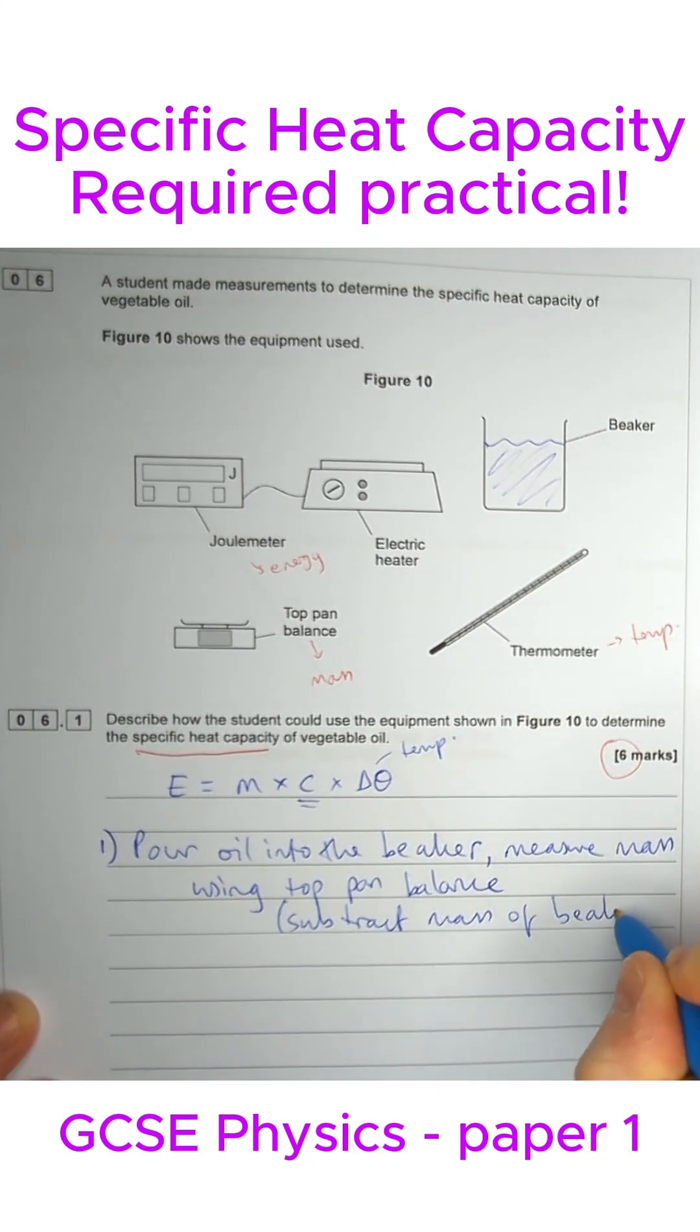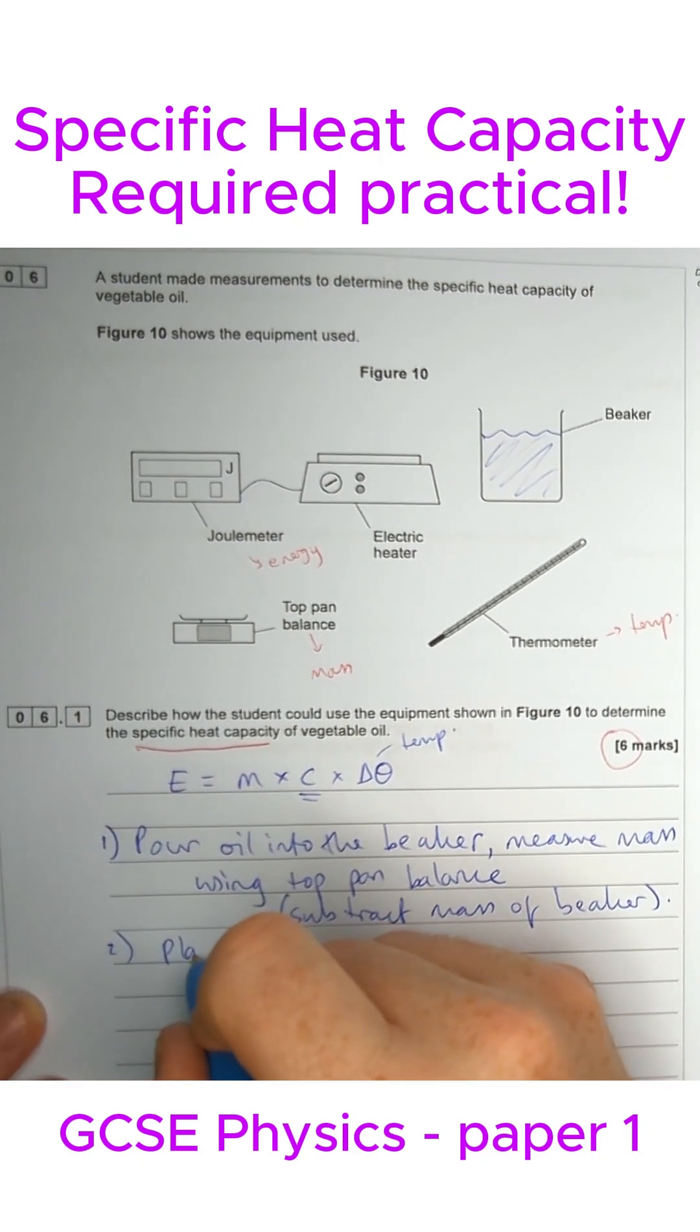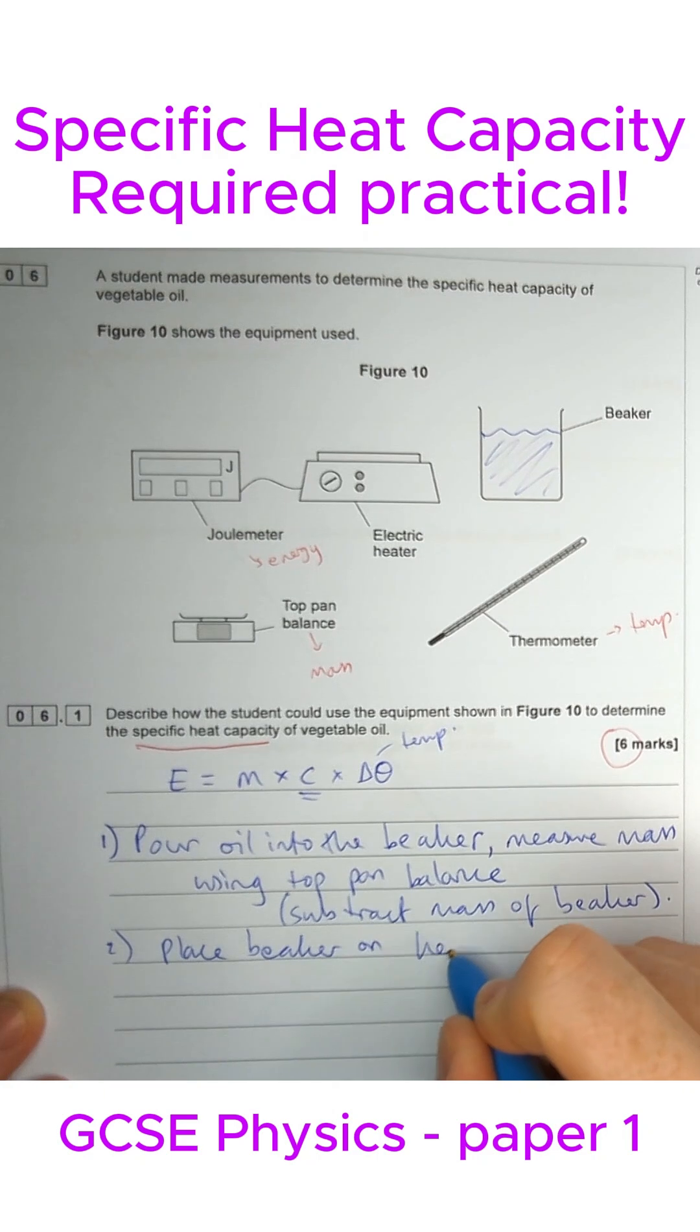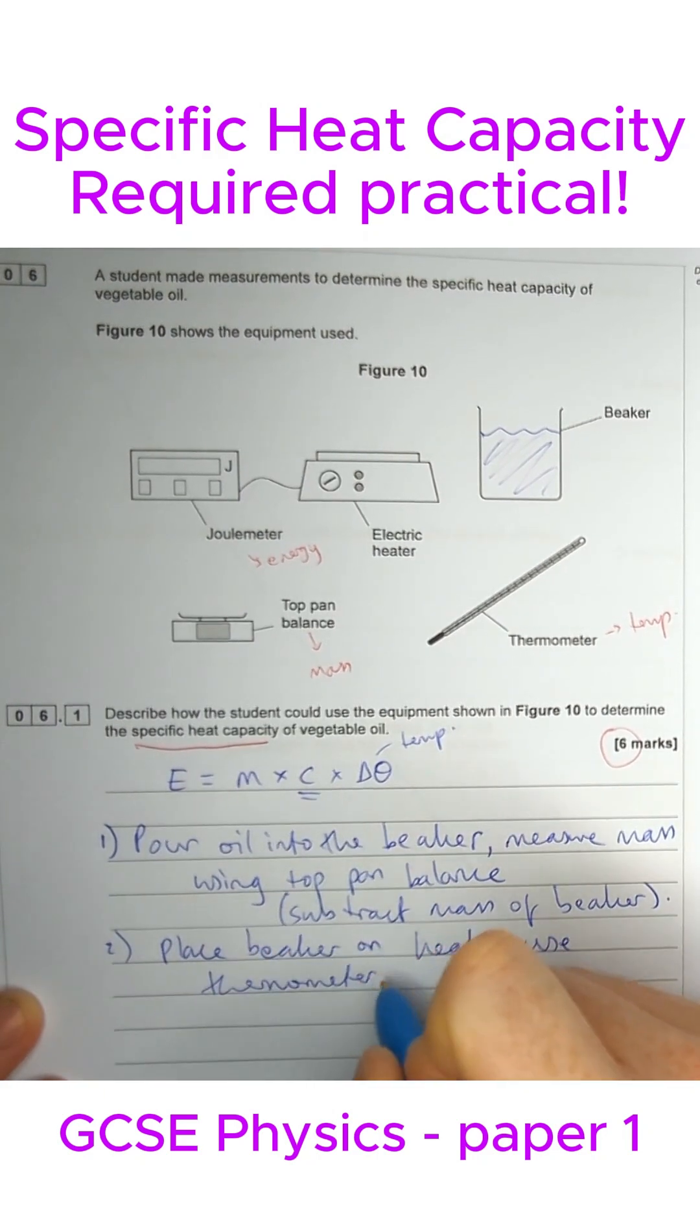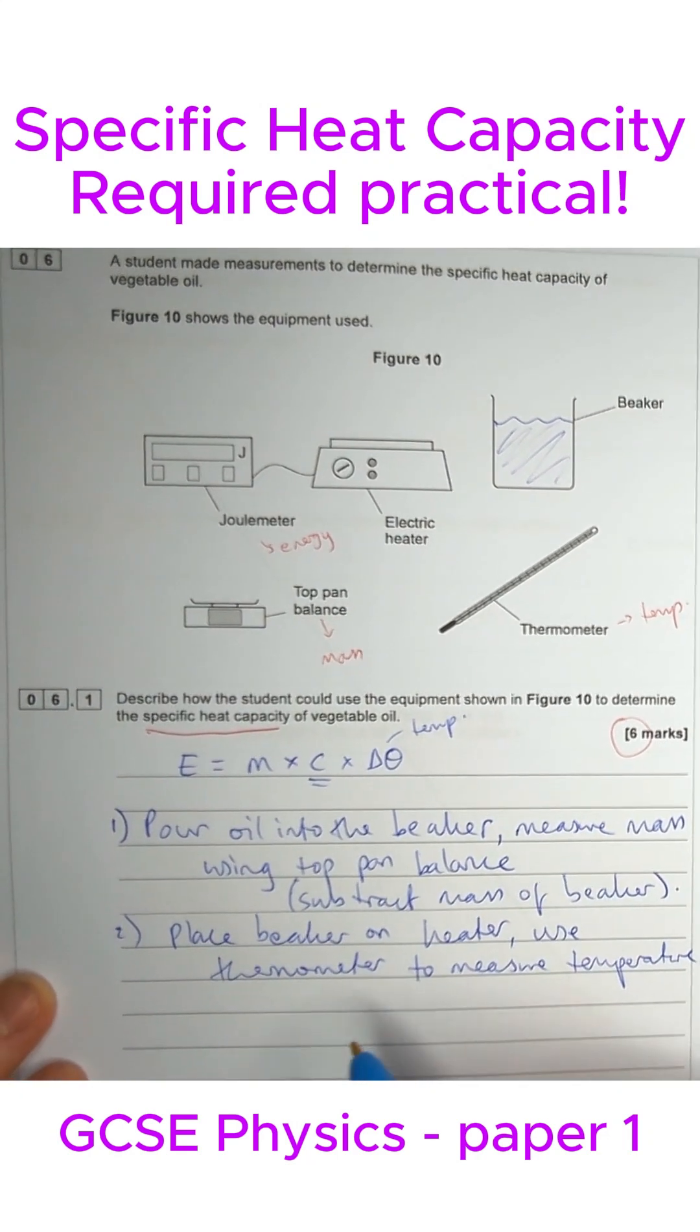Then we're going to place the beaker once you've measured the mass on the heater, and we're going to use the thermometer to measure temperature. Next we're going to turn the heater on, so we start the heating basically.